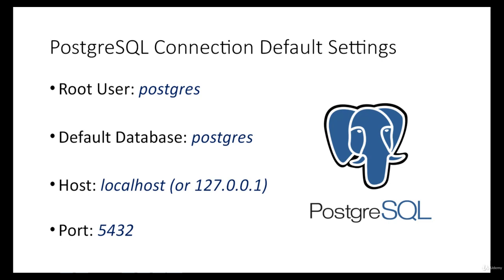Next, the port, which we defined when we installed PostgreSQL. If you kept the default port, it will be 5432. If you changed the port, you can use that as well. Let's see how we can enter that in SQL Ectron.